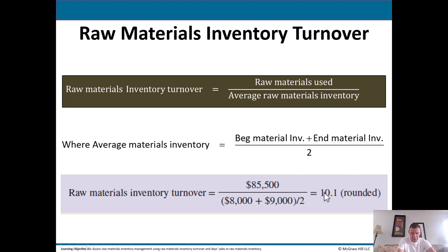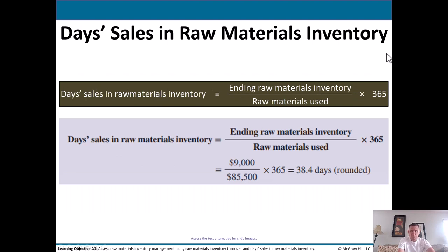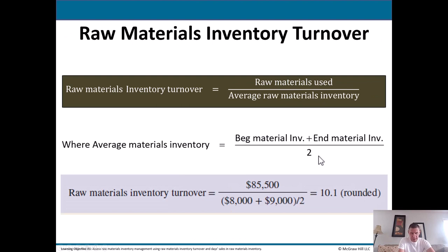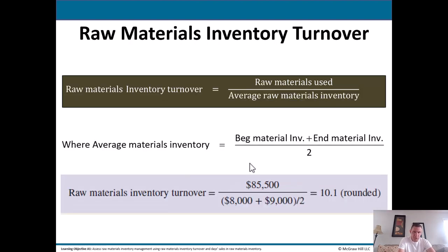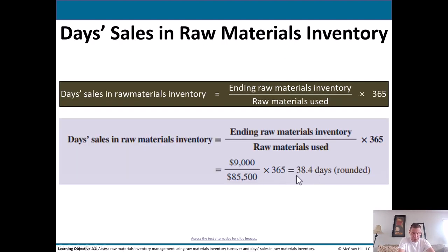Think of this as the higher the better. Then there's day sales in raw materials inventory — the same concept expressed in number of days. They've taken 365 and divided it by 10.1 to get 38.4. You can do it either way. It's like saying: we cycle our inventory just over 10 times every year, or we cycle our inventory about every 38.4 days, roughly speaking.